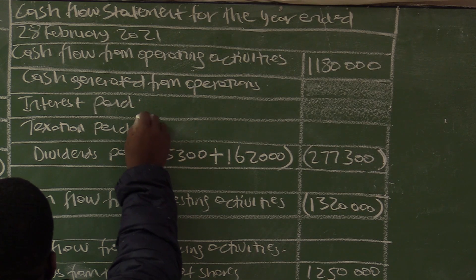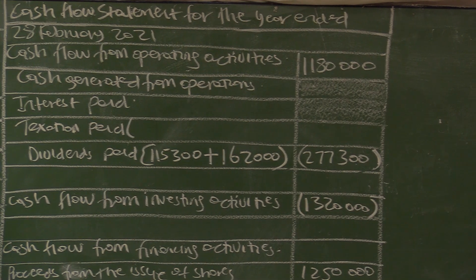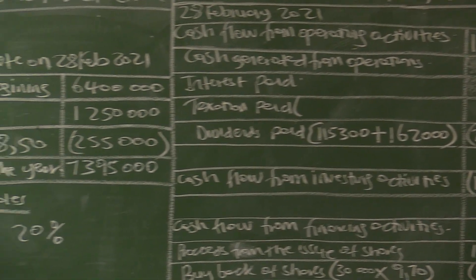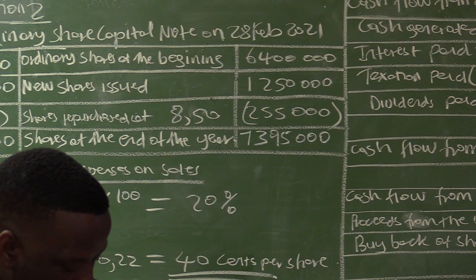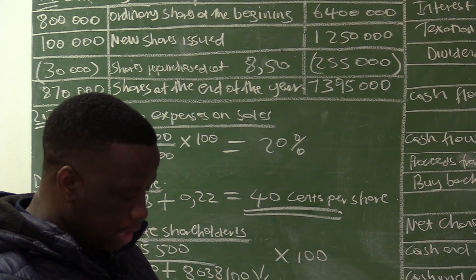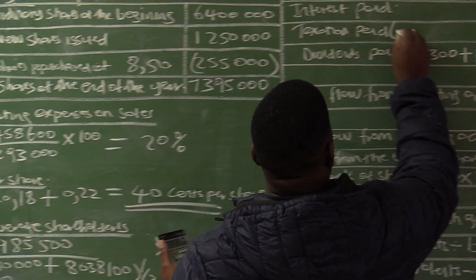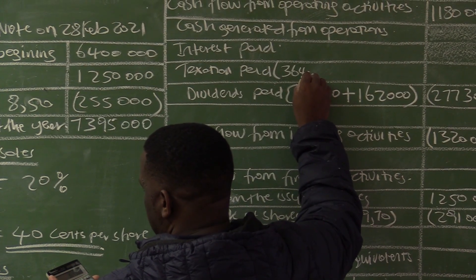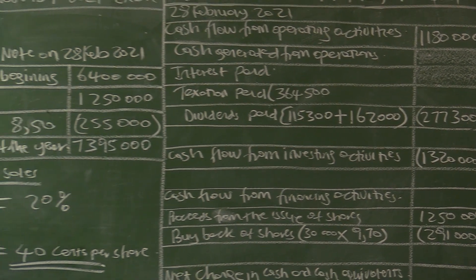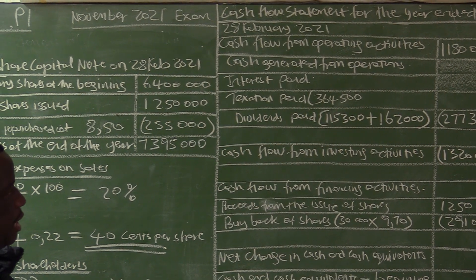For taxation paid, we need the income tax for the year. The income tax for the year was not given directly. We have net profit before tax of $1,350,000 and net profit after tax of $985,500. So the income tax for the year is $1,350,000 minus $985,500 equals $364,500. We were given both figures, so we just calculated the difference.